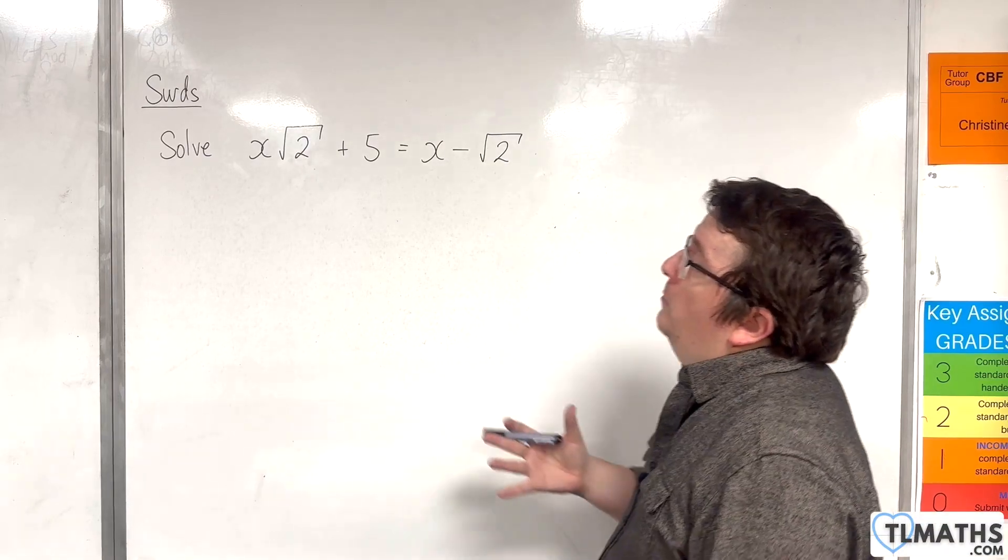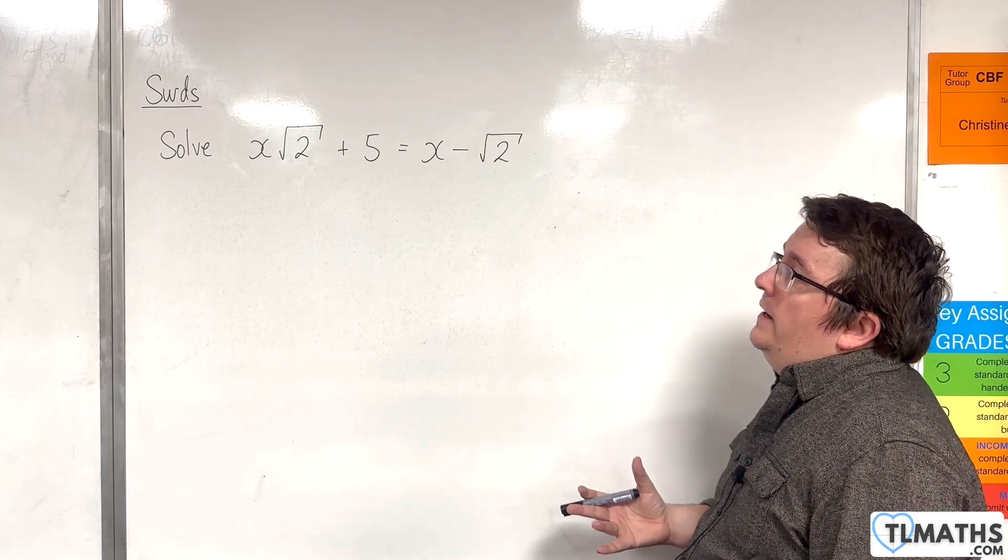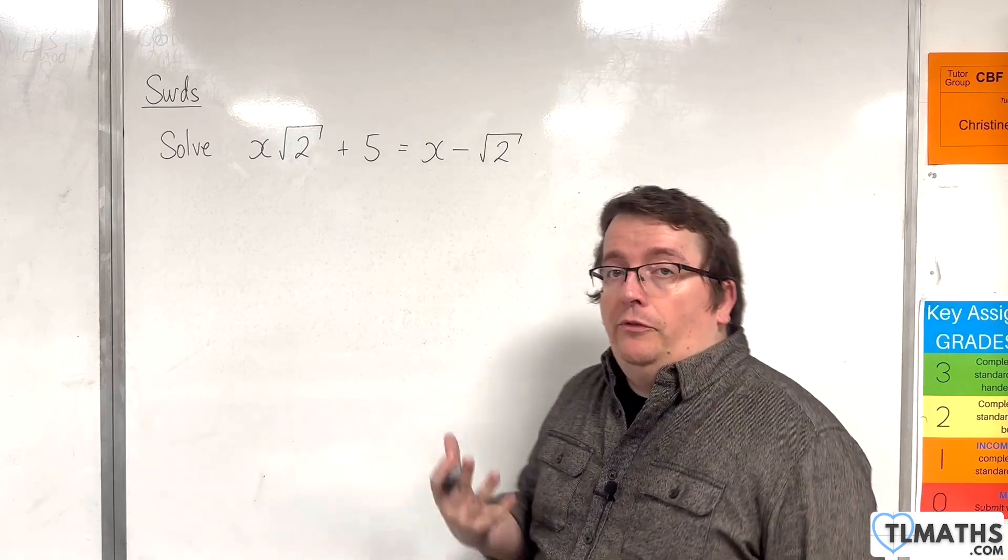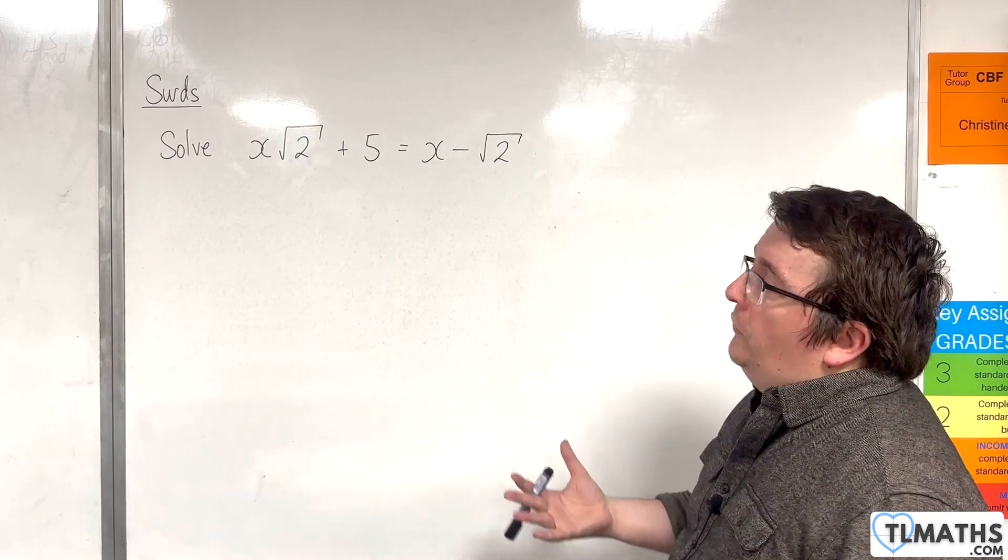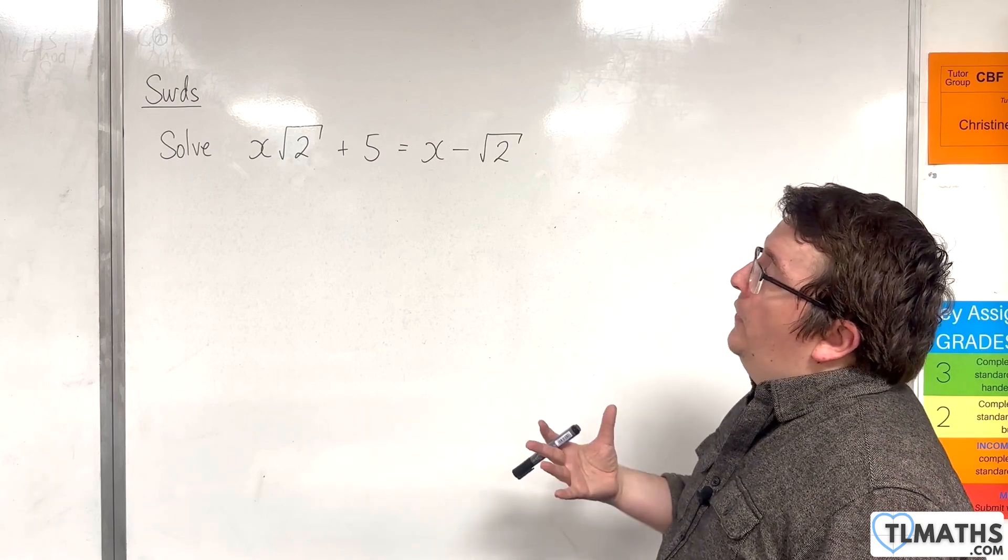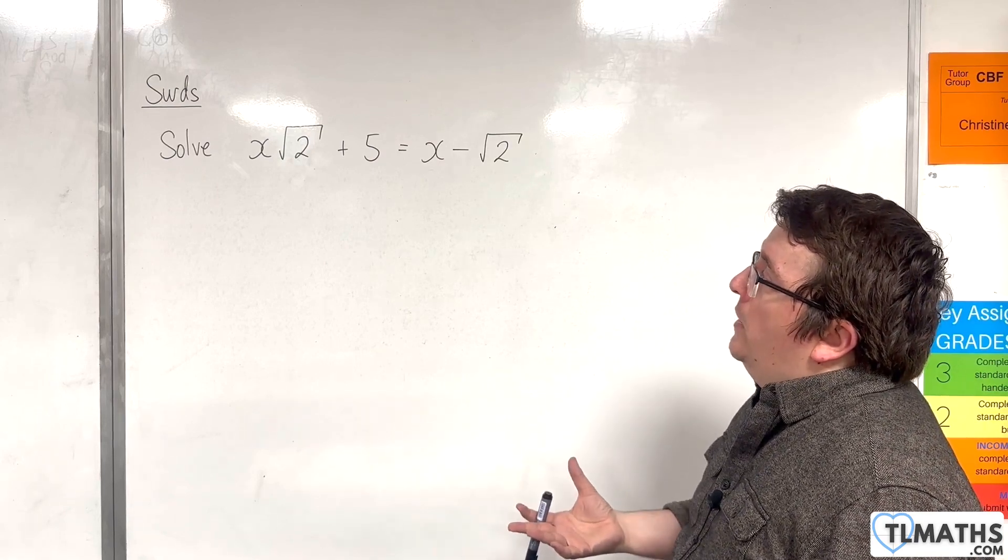In this video, I want to go through an example of solving a linear equation that involves surds. So we have x times the square root of 2 plus 5 equals x minus the square root of 2.